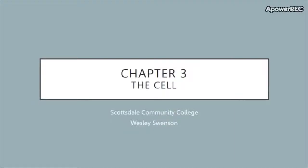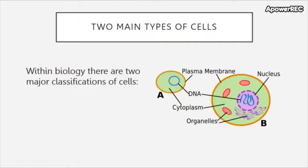Hello everyone and welcome back for chapter 3: the cell. In previous biology courses you probably learned that prokaryotic cells are smaller and simpler than eukaryotic cells, and that the most important difference between them is that prokaryotes lack a nucleus. A nucleus is an organelle within the cell, as seen depicted in this image, that is surrounded with a lipid membrane and houses the chromosomes or genetic information of the cell.